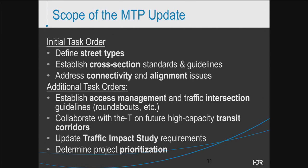Scoping of the MTP includes seven major task areas. Initial tasks underway include the definition of street types, the establishment of design standards and guidelines for each of the cross-sections of street types, and addressing connectivity and alignment issues within the thoroughfare plan network. Other task orders include the establishment of access, management, and intersection guidelines conducive to complete streets and context-sensitivity, collaboration with the T on transit connectivity and high-capacity transit corridors, update of the traffic impact study requirements, and the definition of short- and long-term projects with associated prioritization to address long-term growth and needs.